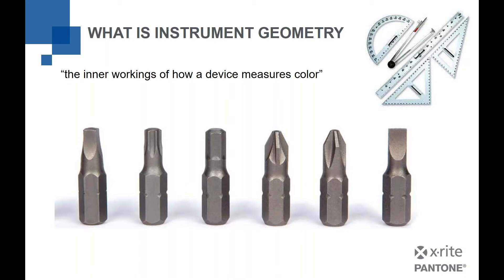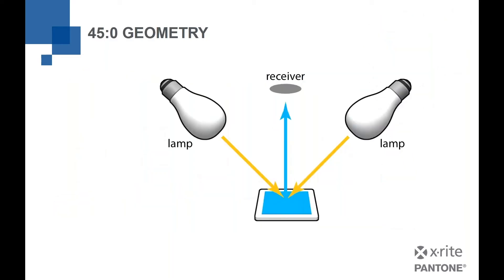We might say: I've got one of those screwdrivers where I can stick all these different heads in — a Torx bit, a Robertson bit, flat head, Phillips. They all go into a screwdriver, but they're all different tools for different reasons. The same thing can be said of spectrophotometers. They all measure color, but they measure it differently, for different reasons, giving us different results. So let's look at the geometries.